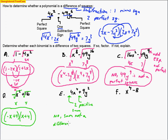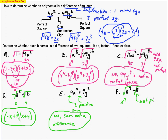For x⁴ − 8, we have one minus sign. The square root of x⁴ is x². But 8 is not a perfect square — a lot of people think the square root of 8 is 4, but that's taking half of 8. We're looking for two numbers that multiply to make 8, and we just can't get an integer — it's an irrational number. So this is not a perfect square, we do not have a difference of squares, and the answer is no: 8 is not a perfect square.